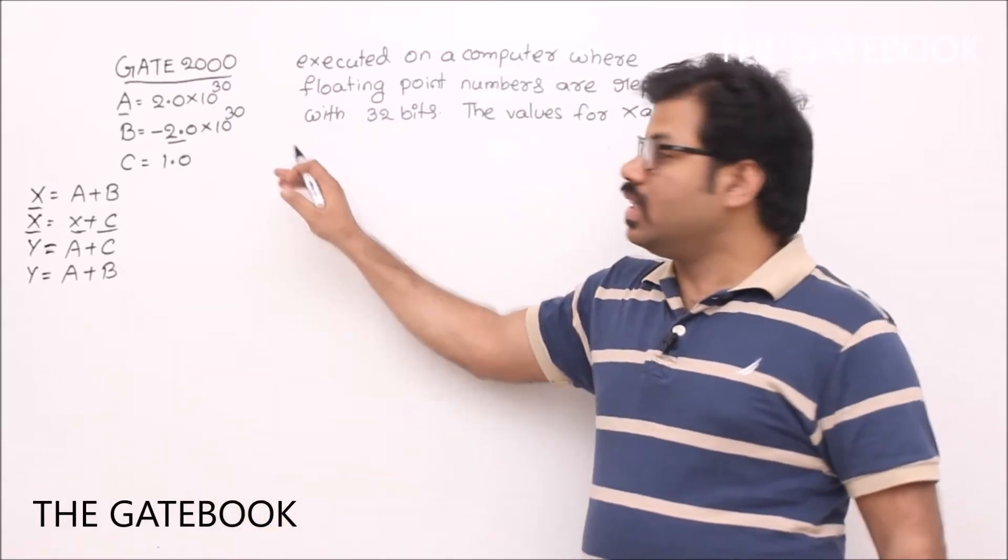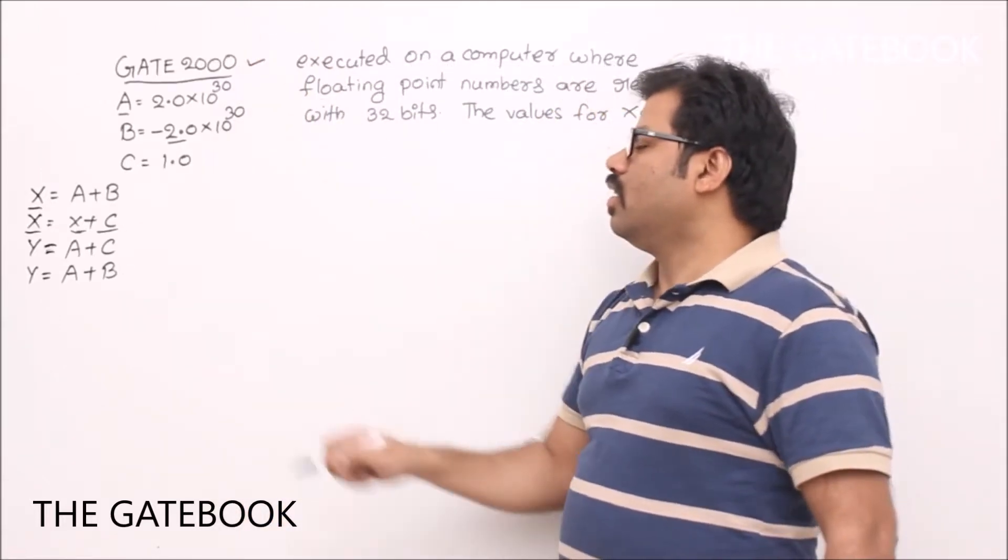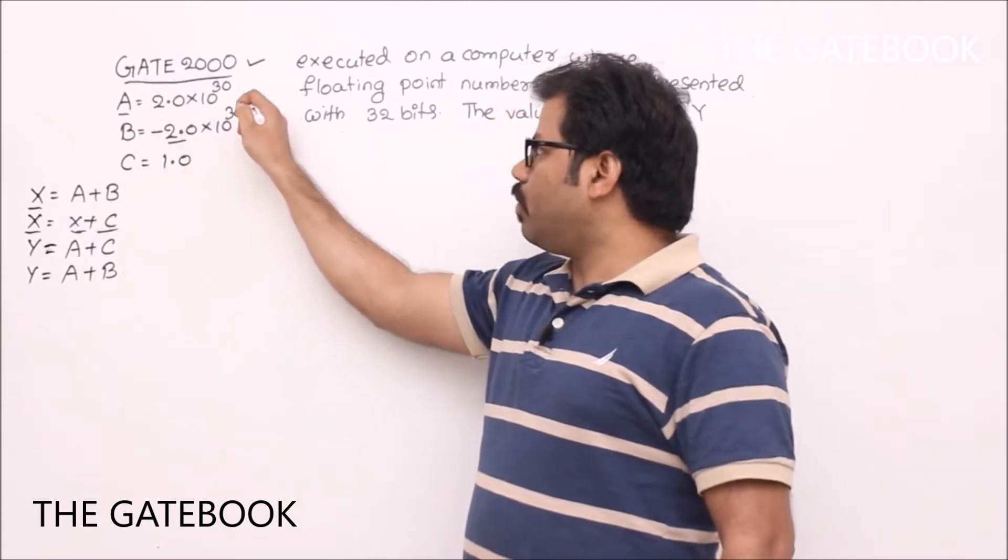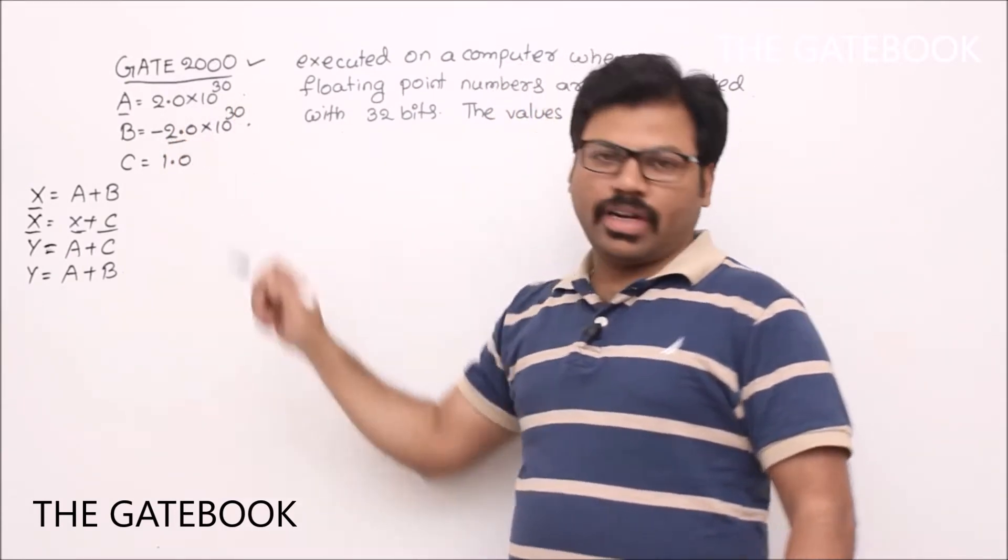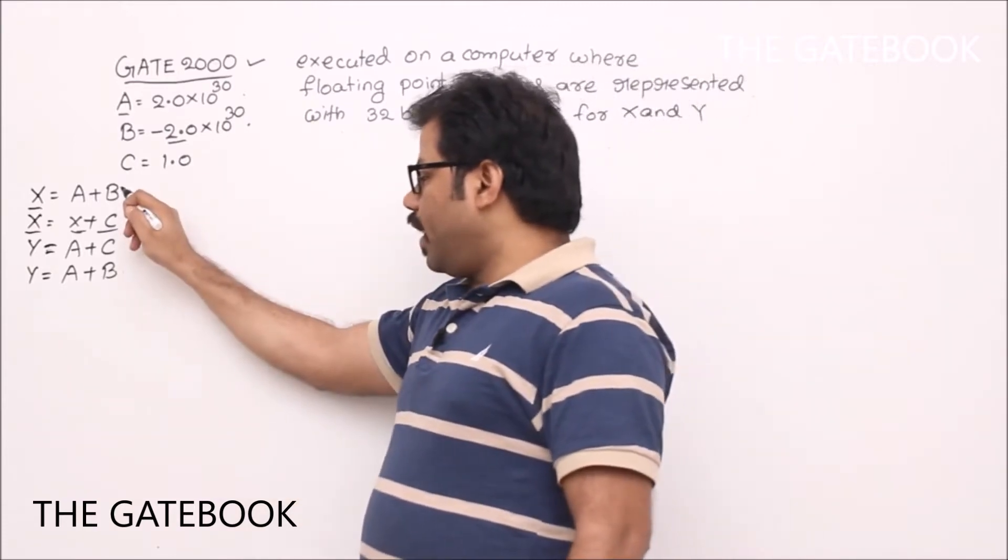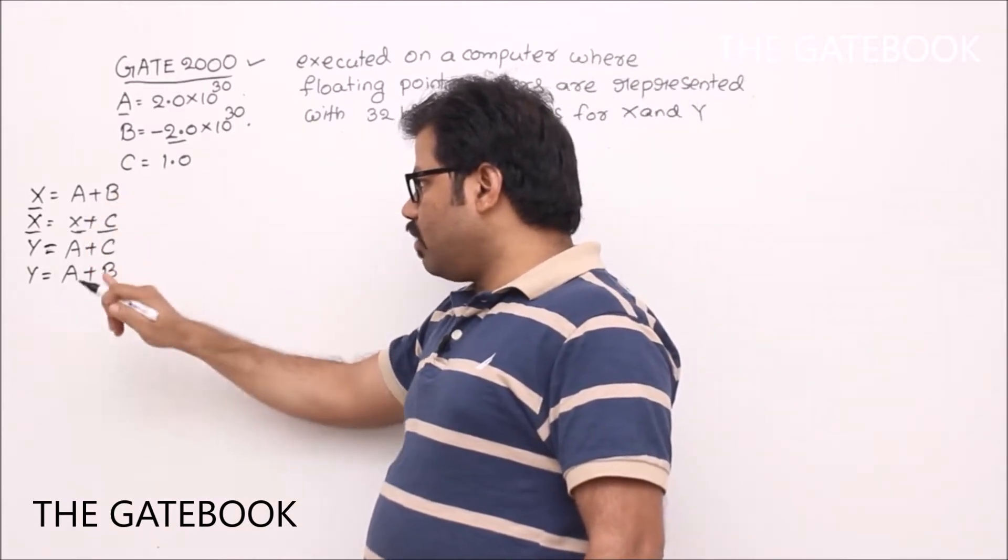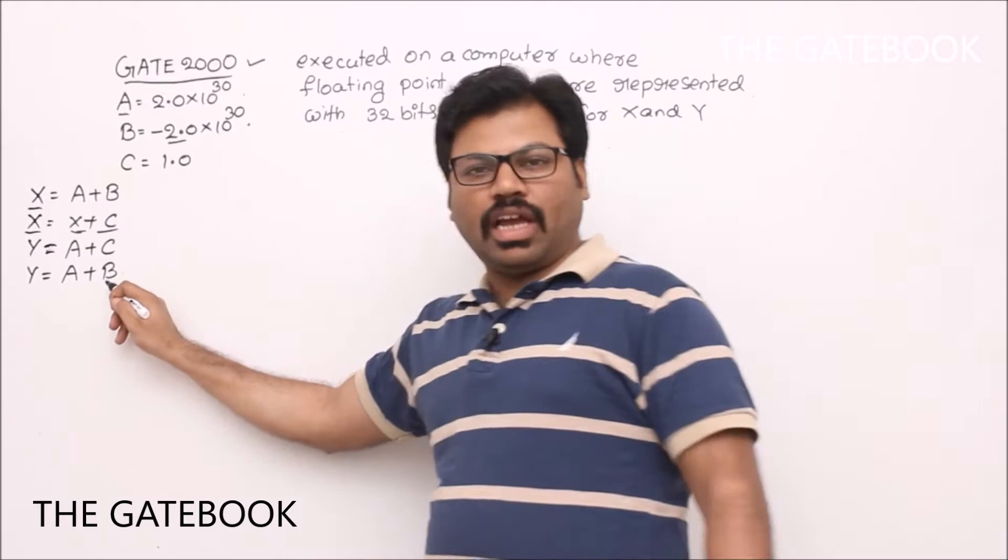Now we will see one more GATE question which is asked in GATE 2000 paper. So A is 2.0 into 10 power 30, B is minus 2.0 into 10 power 30, C is 1.0. We have to do X equal to A plus B, X equal to X plus C, Y equal to A plus C, Y equal to Y plus B calculations.